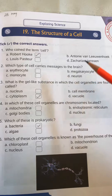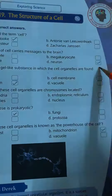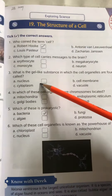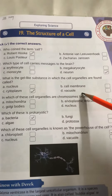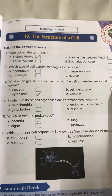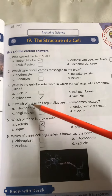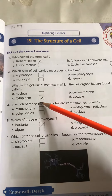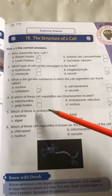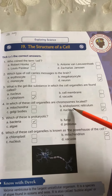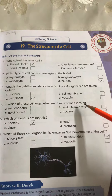We know that it's a neuron. Then: what is the gel-like substance in which the cell organelles are found? It is called cytoplasm. Now, in which of these cell organelles are chromosomes located?